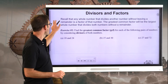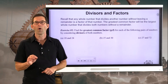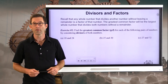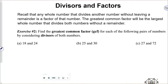Recall that any whole number that divides another number without leaving a remainder is a factor of that number. The greatest common factor will be the largest whole number that divides both numbers without a remainder. In exercise number 2, we find the greatest common factor — often abbreviated as GCF — for each of the following pairs of numbers by considering divisors of both numbers.